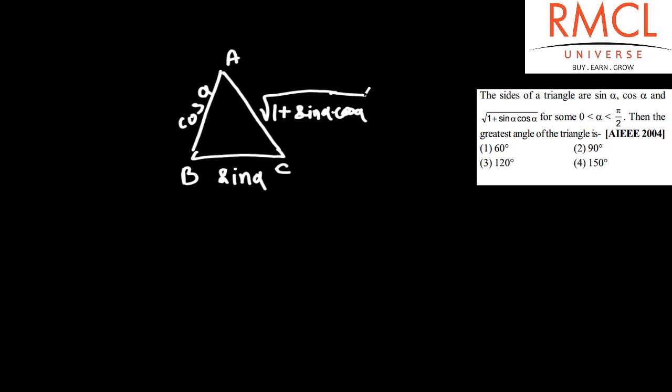We know that sqrt(1 + sin alpha cos alpha) is greater than 1, so this side is greater than sides AB and BC. Therefore, angle B will be the greatest angle in triangle ABC.